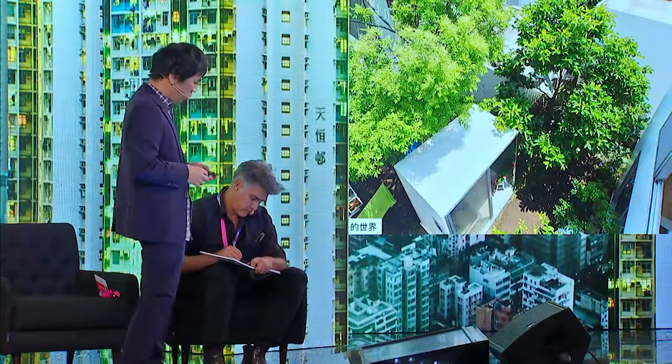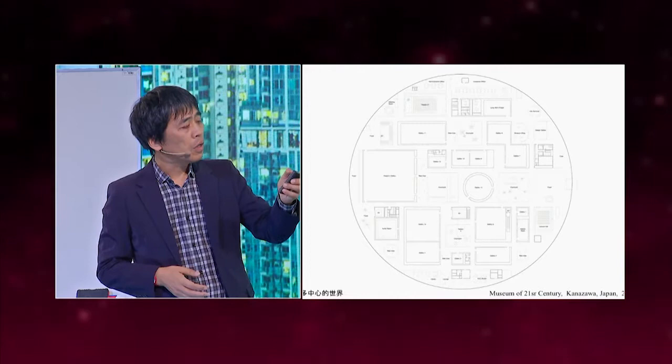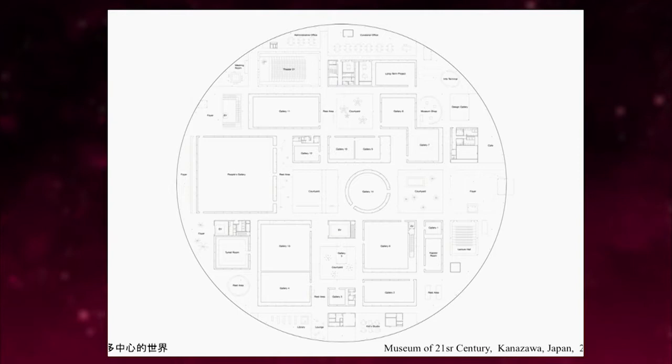This is another example of housing where architecture and nature are really mixed together in the middle of Tokyo. This is another example of a museum that we made in 2004. It's a museum, but there is no main entrance — there are many entrances. You can do an exhibition with only three boxes, or you can use 13 boxes for a big exhibition.